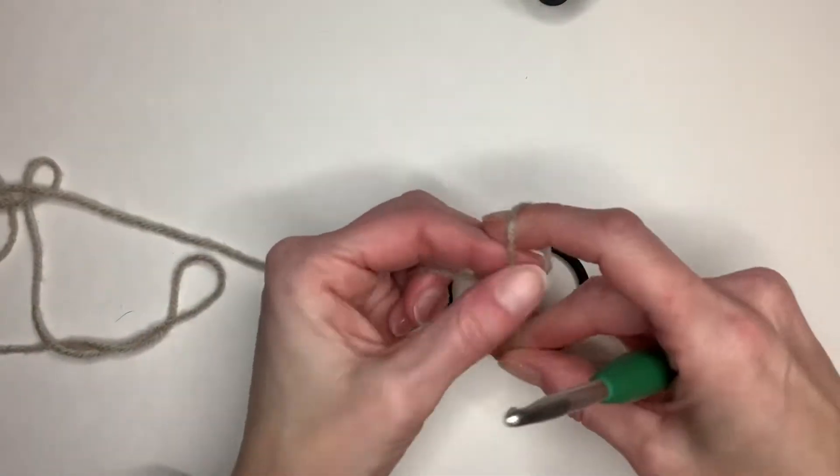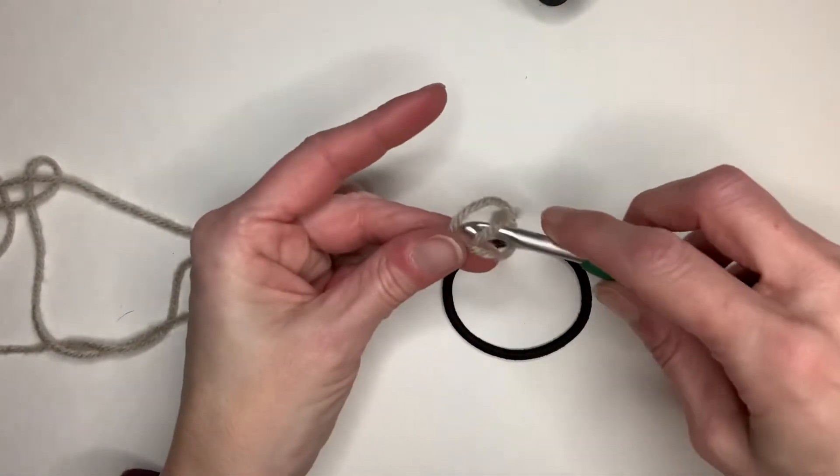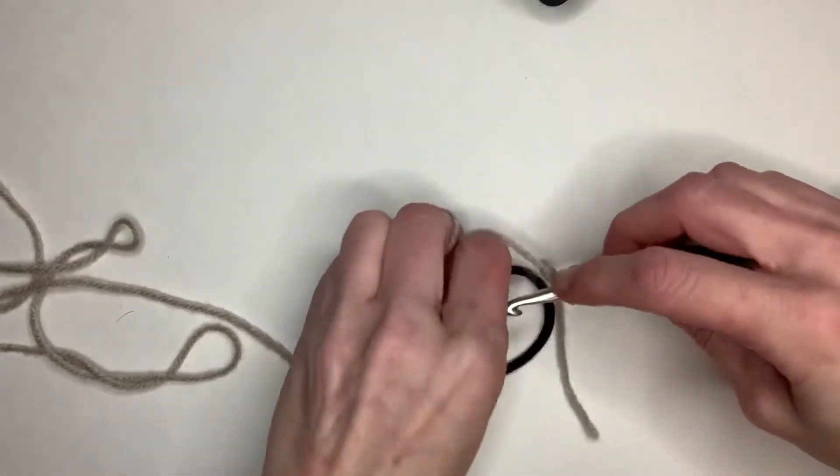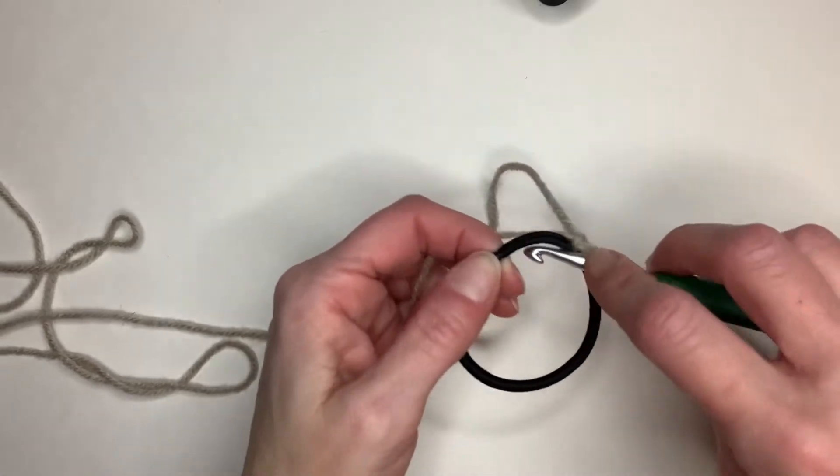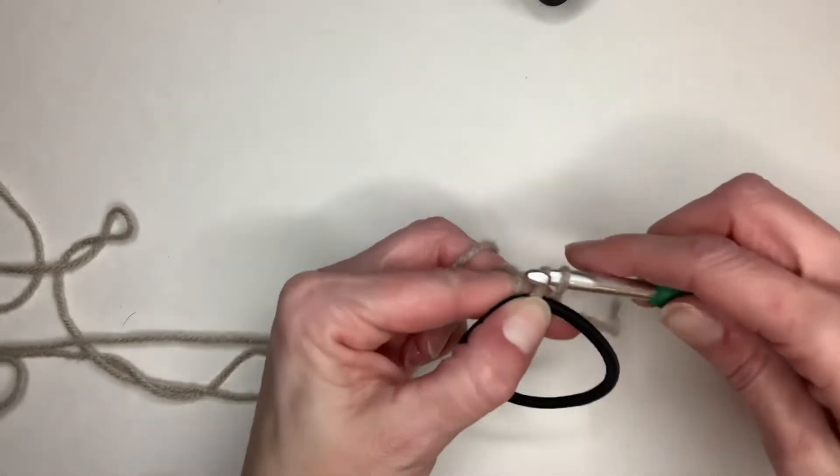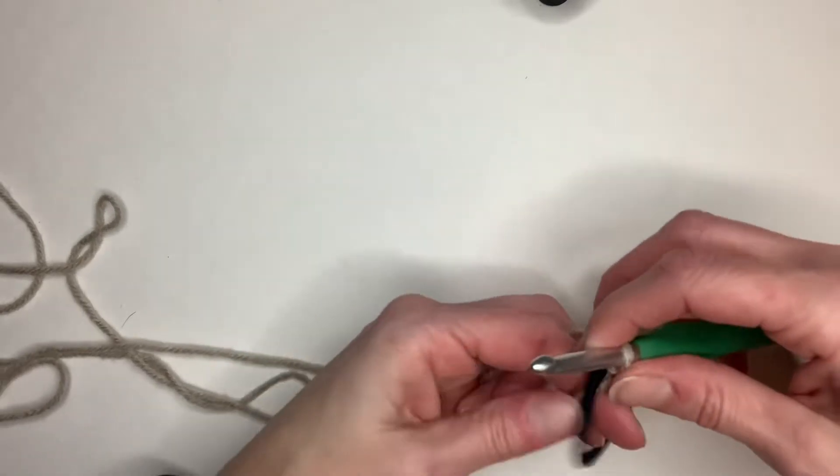Alright, so what you're going to do is you put your yarn on your hook and then you're going to go like this and pull this yarn up around and you're going to do a slip stitch to get it onto there.